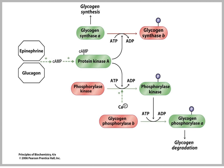Looking at glycogenolysis, we can see from this slide that glucagon as well as epinephrine lead to an increase in cyclic AMP through G-coupled receptors. And the end result is that we have a phosphorylation of enzymes that are involved in glycogen degradation.